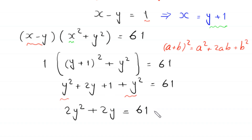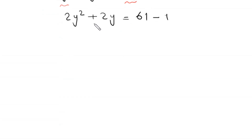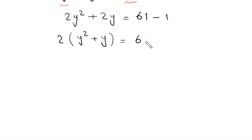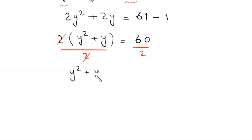So we have 2y squared plus 2y plus 1 equals 61. We move this plus 1 to the right hand side, giving negative 1. From the two terms we factor out 2 as a common factor: 2 times (y squared plus y) equals 60. Dividing both sides by 2, this 2 cancels, and we are left with y squared plus y equals 30.